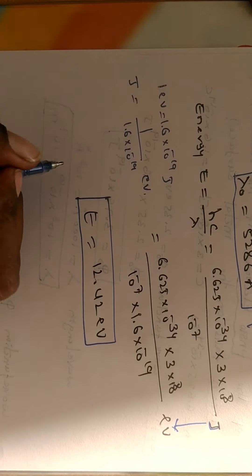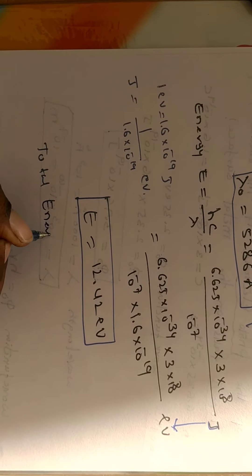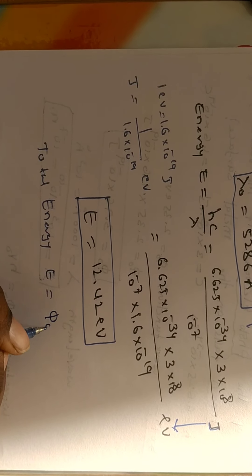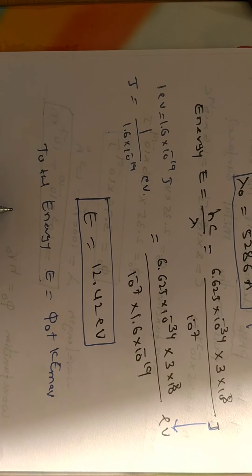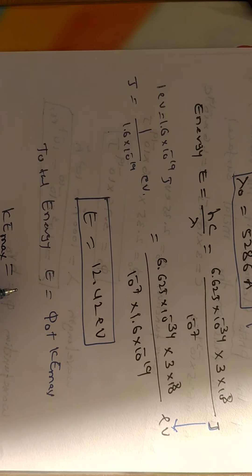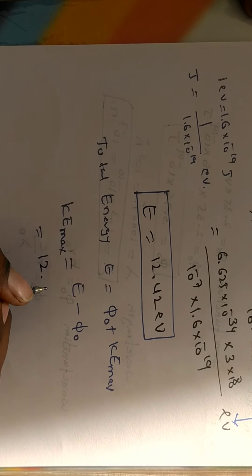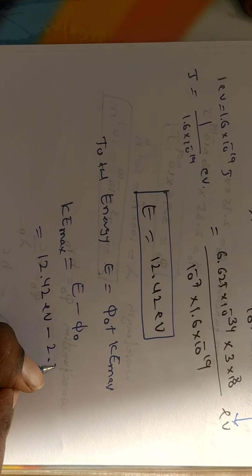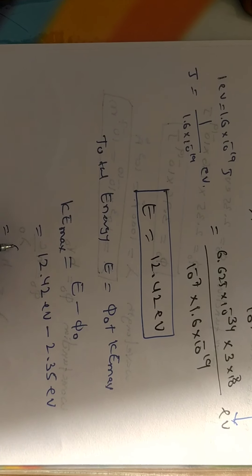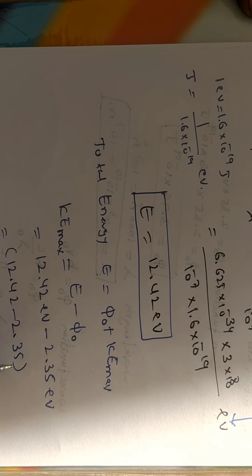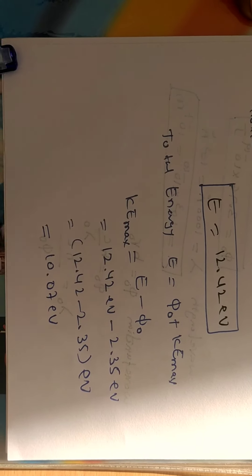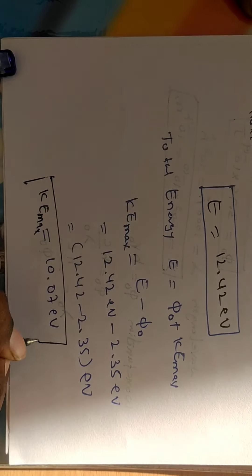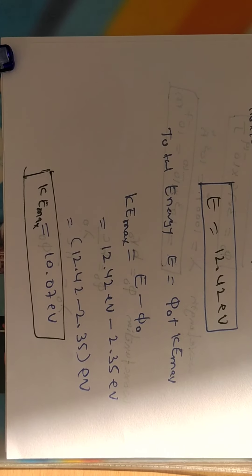Einstein photoelectric equation: total energy equals kinetic energy plus work function, so KE maximum equals energy minus work function. KE max equals 12.42 electron volt minus 2.35 electron volt, which gives 10.07 electron volt. This is the maximum kinetic energy of the photo electrons. Problem number three is complete.